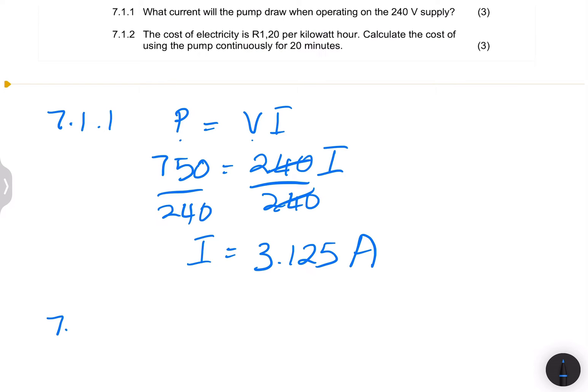Now, let's get into the cost calculation. They say to us the cost of electricity is 1.20 per kilowatt hour. And they say calculate the cost of using the pump continuously. So in this case, what we're going to do is we're going to look for how to calculate the cost to use the pump continuously. And this is for 20 minutes.